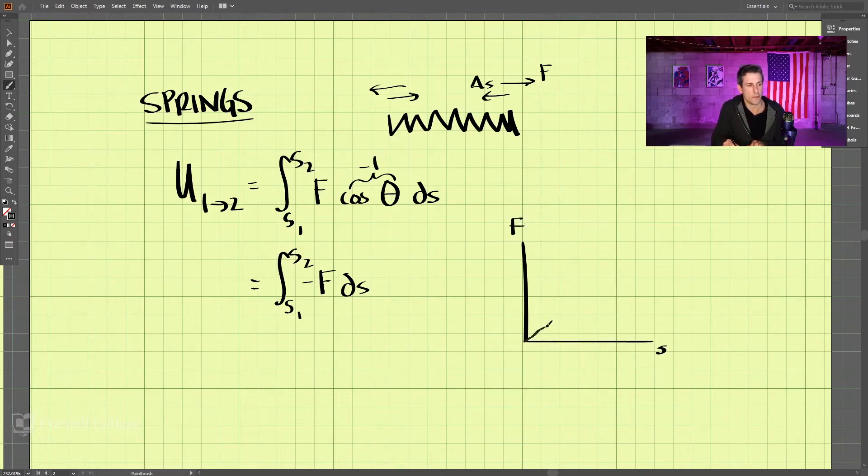If you remember, springs are assumed to be linear here. And the slope of this line here is k, which is the spring constant. So this is just the negative area we're looking for between two values, s1 and s2. We're looking for this area, and then we're going to take the negative sign because of this negative sign out front.